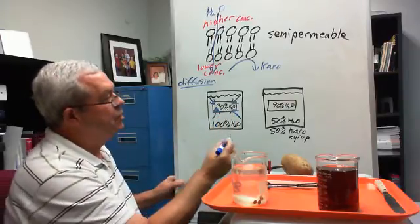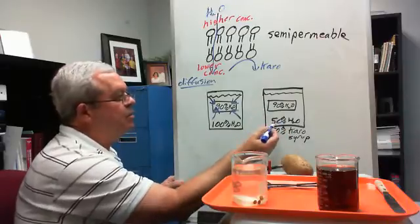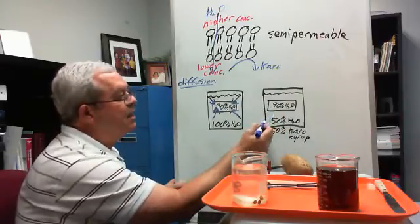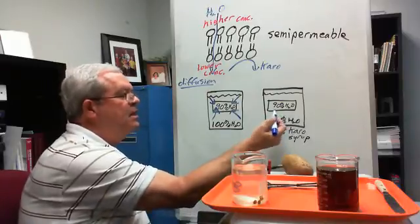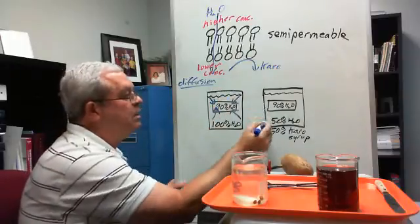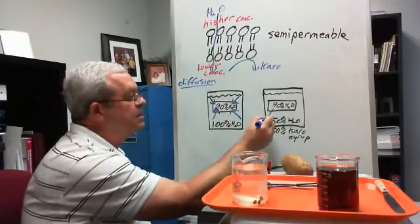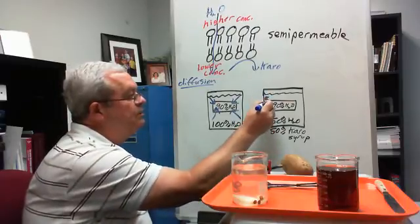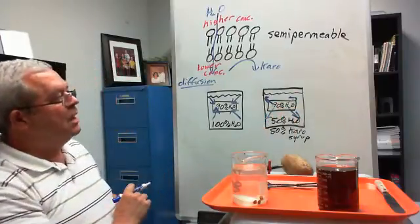What about this one over here? Now, the Karo syrup can't get in. Now, it's not outside the jar, it's in the jar, of course, in the beaker. But the potato, Karo syrup can't get into the potatoes, can't diffuse through the plasma membranes, but the water can come or go. So which way this time? Ninety percent inside, fifty percent outside. The water will diffuse outward. The water will diffuse outward.